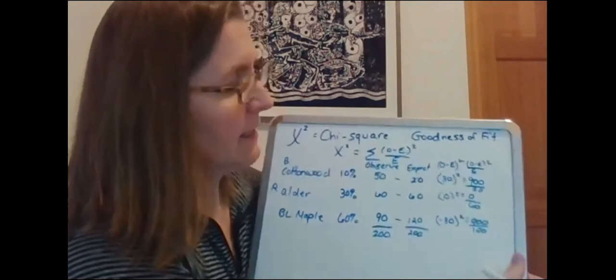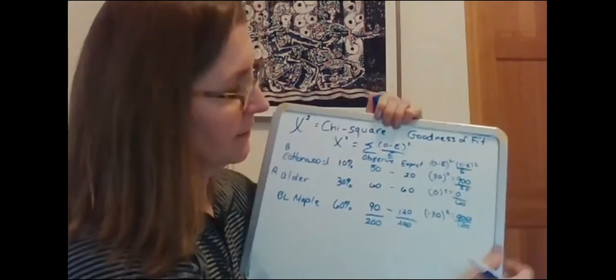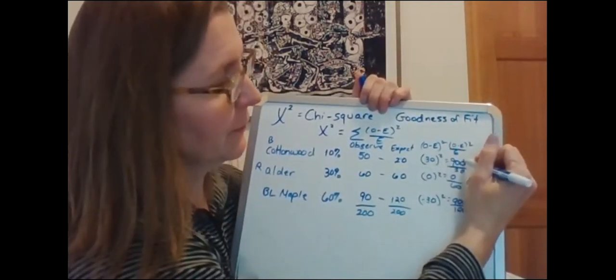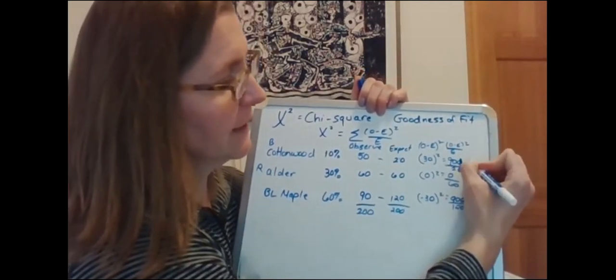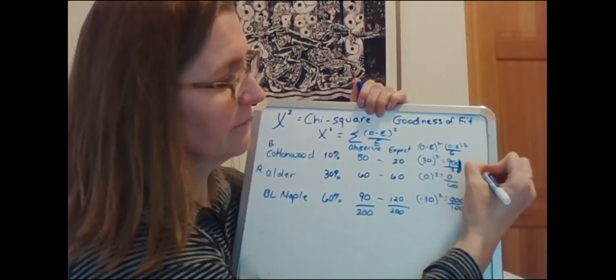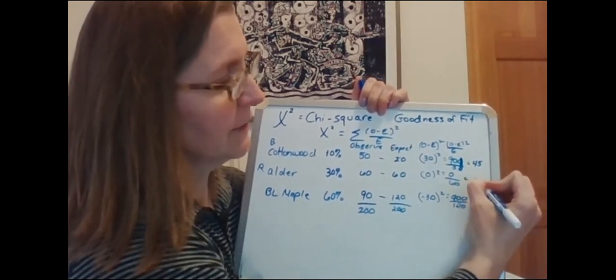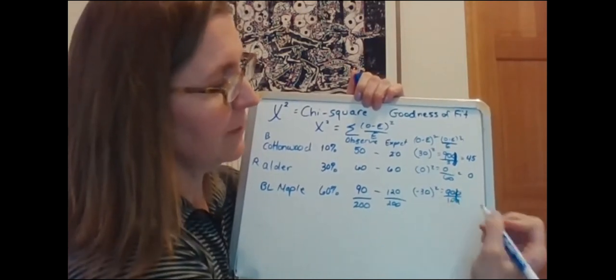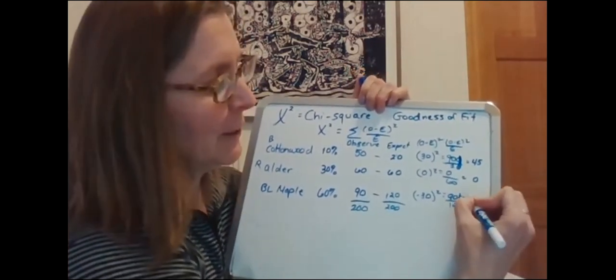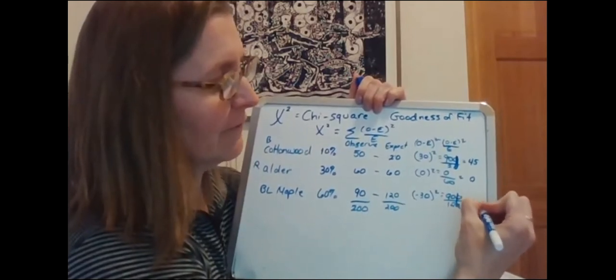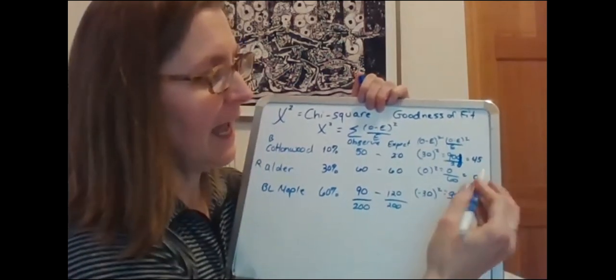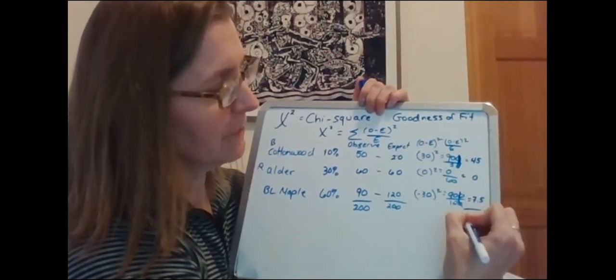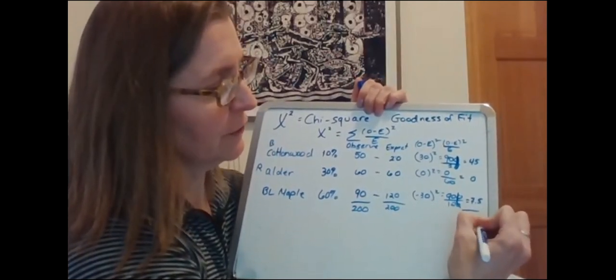And so when I do that I can actually do some of these just by looking at them. So I can cancel out these zeros and 90 divided by 2 equals 45. This is going to equal 0 and then 90 divided by 12, I have to use a calculator to do that but the answer is 7.5. And then I can add 45 and 7.5 together to get my chi-squared value which is 52.5.